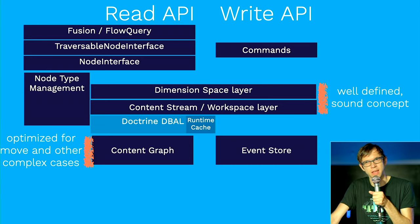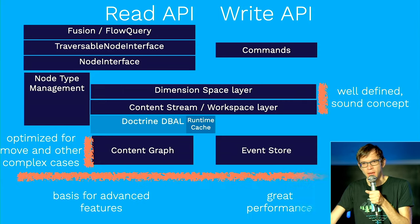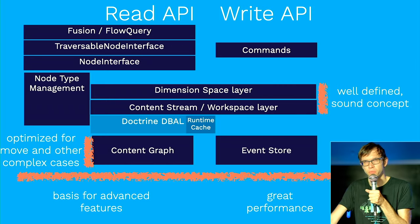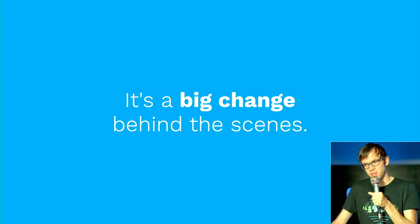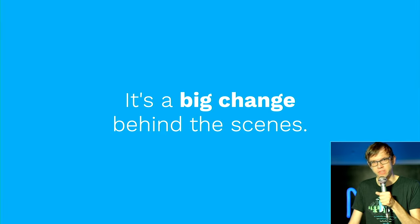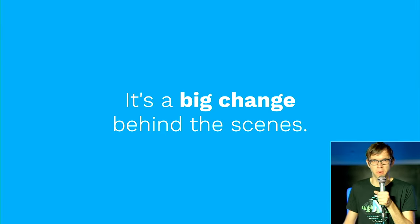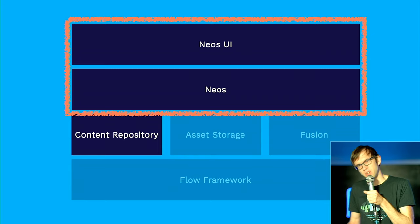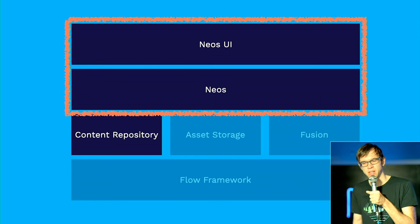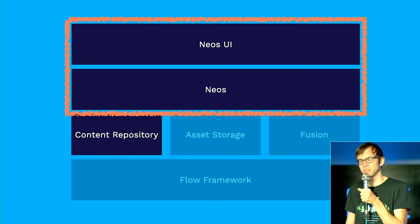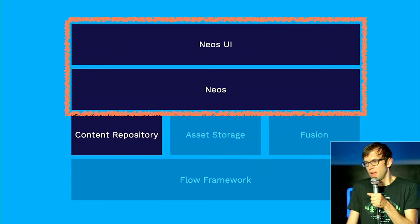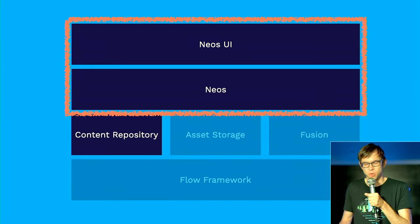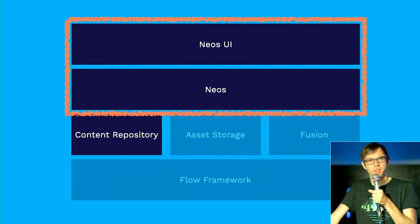That was a recap from last year's conference. It doesn't stop there — as we change the public API related to writing and reading data, we also need to change the upper layers, so Neos and the Neos user interface need adjustments too. Just by the size of it, it's quite a big thing. The natural question is: why are we actually doing this?